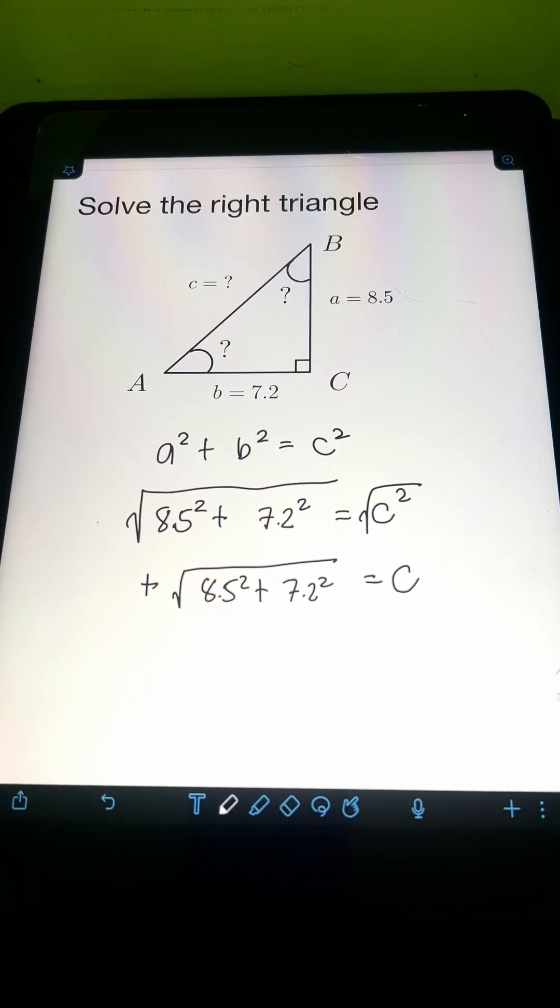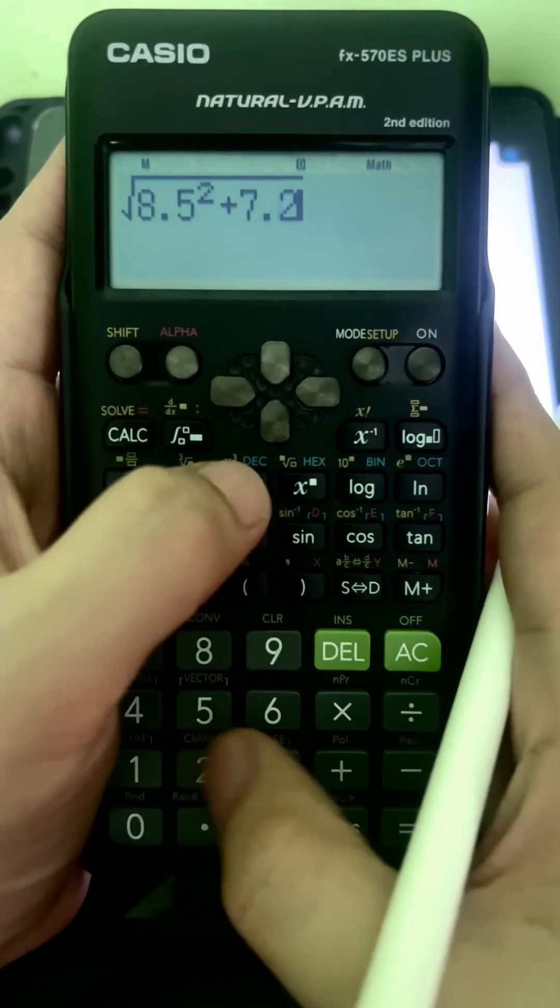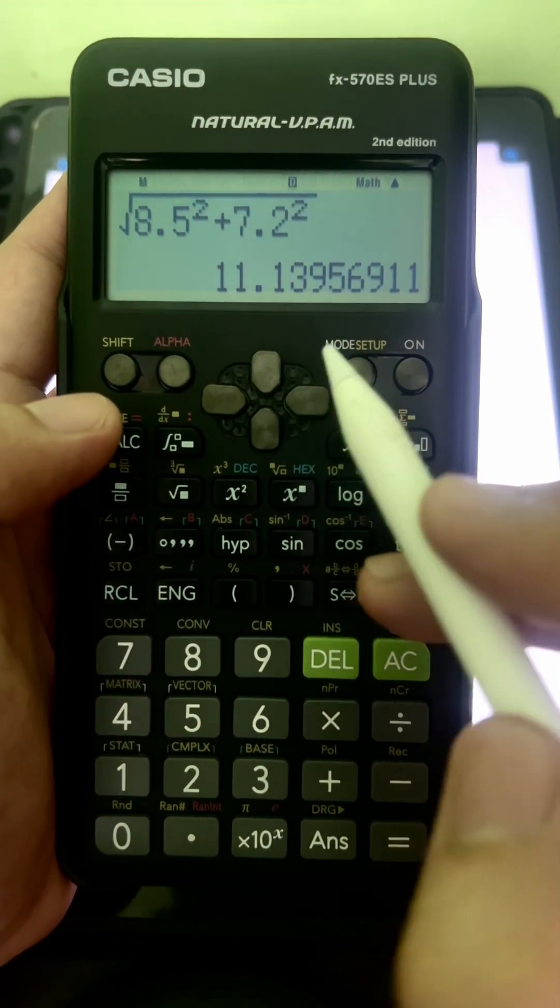So using a calculator, the value of C will be square root of 8.5 squared plus 7.2 squared. So it's approximately 11.14 units.